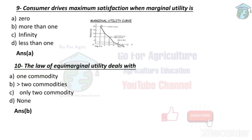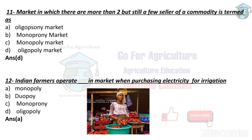The law of marginal utility deals with more than two commodities — it can be two or more than two. Next, the market in which there are more than two but still a few sellers of a commodity is called oligopoly. Basically, this means there are more than two sellers in the market, so the answer is oligopoly market.